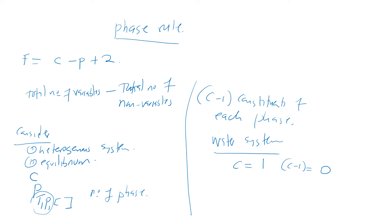For a silver-lead system, the number of components is two, so C minus one gives a value of one. At least the composition of one component is used, determining the concentration of either silver or lead.